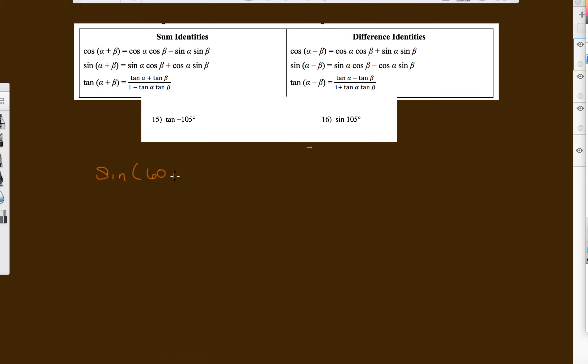We'll use 60 plus 45, which is going to be the same as sine 60 cosine 45. Right? It's our sum, right? We're going to add them together. Cosine 60 sine 45.